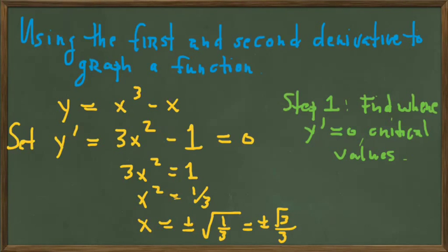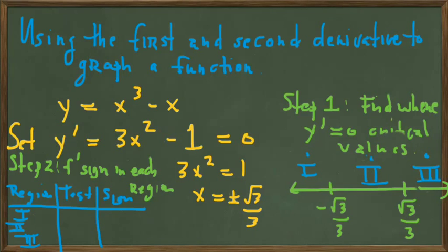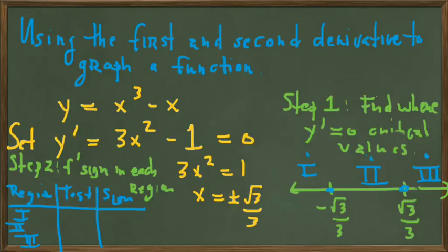If we put those two critical values on a number line, we see that divides our number line into three regions, which we have tagged with Roman numerals 1, 2, and 3. Notice that we have two critical values, but that divides our number line into three regions — so there's one more region than the number of critical values.